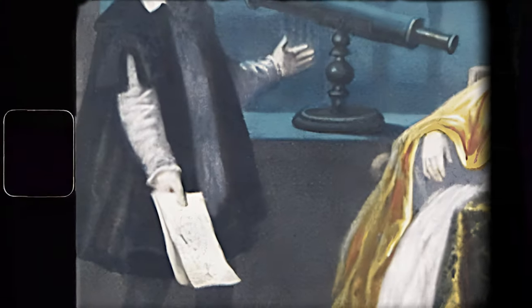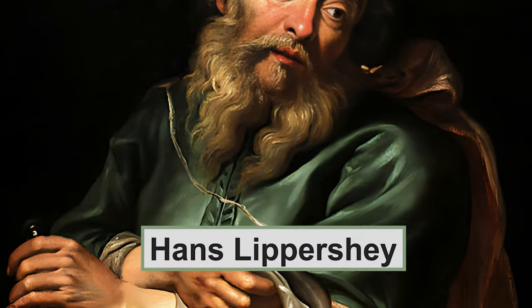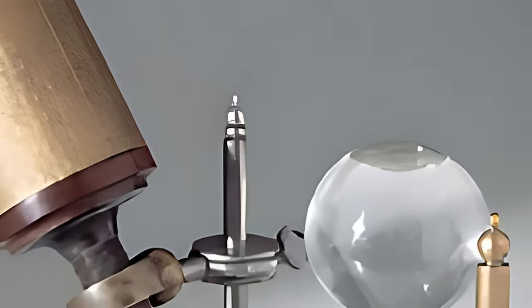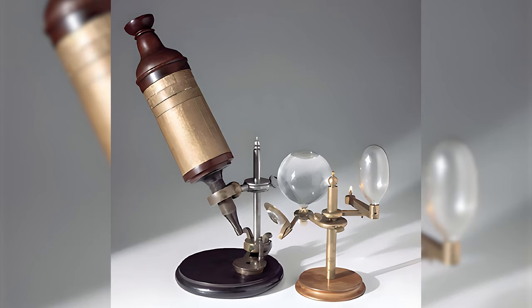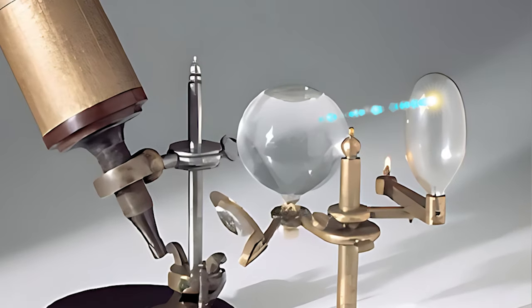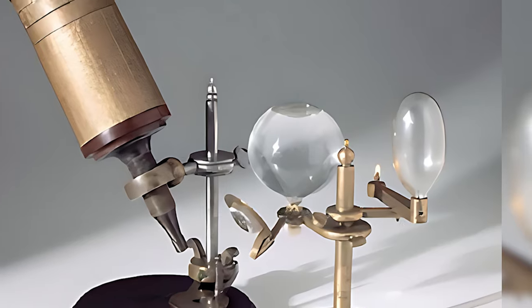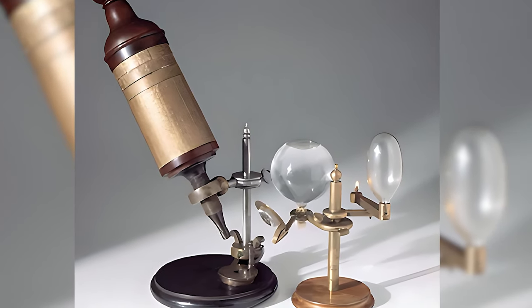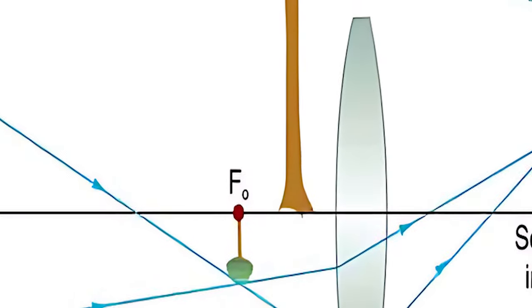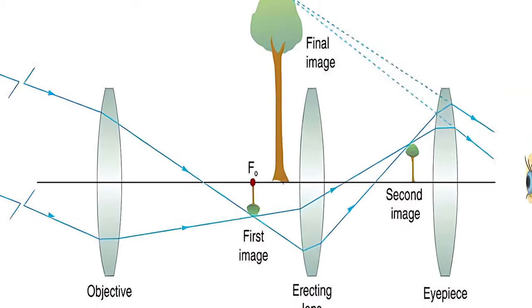Now, imagine the revolutionary moment when the first telescope was conceived in 1608. A Dutch spectacle maker named Hans Lippershey designed a device that used lenses, curved pieces of glass, to gather and bend light. Picture the very first telescope that had only two lenses aligned, capable of magnifying objects up to three times.